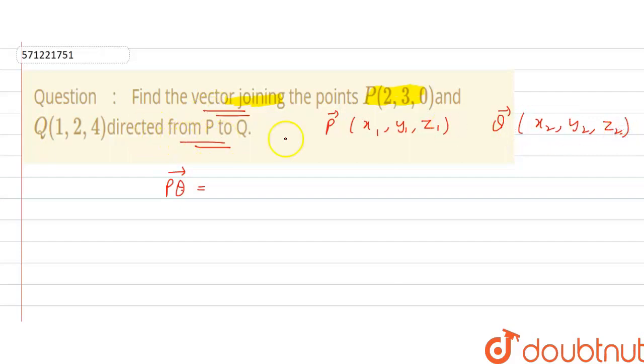Now, if you say that directed from P to Q, the PQ vector we can write as (X2-X1) i cap plus (Y2-Y1) j cap plus (Z2-Z1) k cap. Like this we write PQ vector.